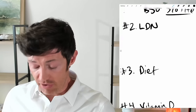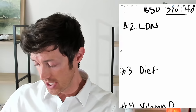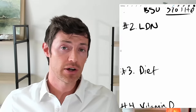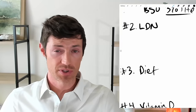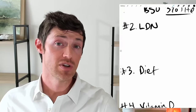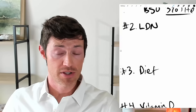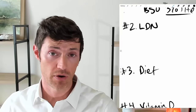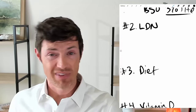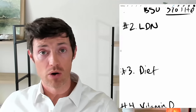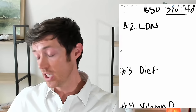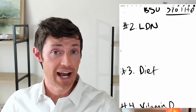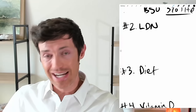Number two is low-dose naltrexone, sometimes abbreviated as LDN. Many patients with Hashimoto's are already familiar with LDN. The problem is it can be difficult to get because you need a doctor willing to prescribe it for an off-label purpose. LDN is used off-label, meaning it wasn't originally intended to treat the condition we're recommending it for. It was originally designed to treat alcohol dependence. Later, doctors found it had a positive benefit on the immune system.